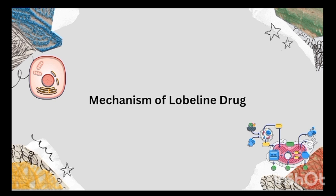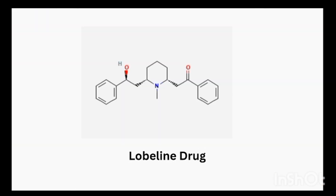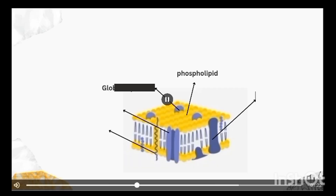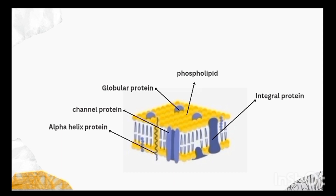Here we have an animation to help you understand the mechanism of action. This animation shows the same structure of Lobeline as discussed earlier — the piperidine ring, two phenyl groups, hydroxyl and methyl groups, and chirality. Before discussing Lobeline's binding, let's review cell membrane concepts: we have a phospholipid bilayer with integral and peripheral proteins embedded in it.